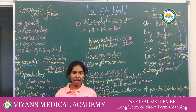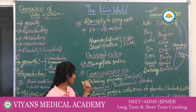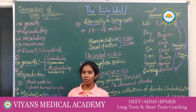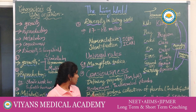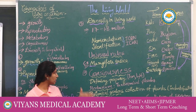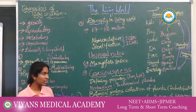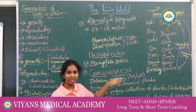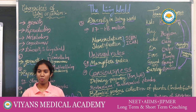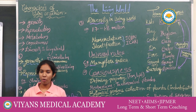The first rule is that biological names are generally in Latin and written in italics. The second rule is that the first word represents the genus while the second word represents the species. The third rule is that if handwritten, write them separately and underline. The fourth rule is that in the first word, the first letter is a capital letter. In the second word, the first letter is a small letter. For example, Mangifera indica — the scientific name of mango.